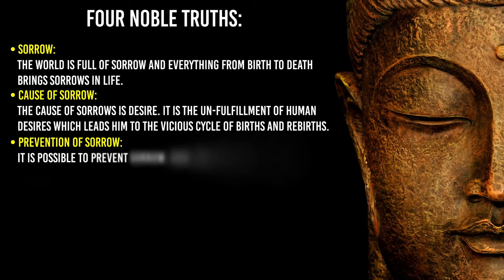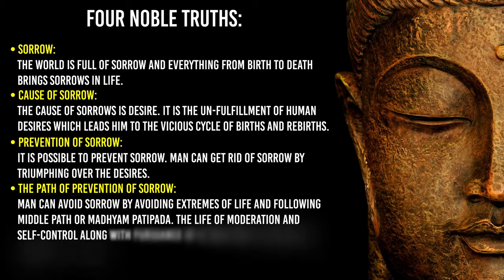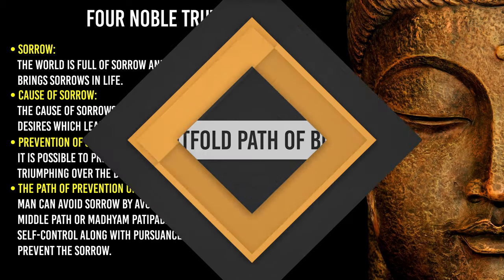3. Prevention of sorrow — It is possible to prevent sorrow. Man can get rid of sorrow by giving up desires. 4. The Path of Prevention of Sorrow — Man can avoid sorrow by avoiding extremes of life and following the middle path or Madhyam Patipada. The life of moderation and self-control along with pursuance of the Eightfold Path is essential to prevent sorrow.